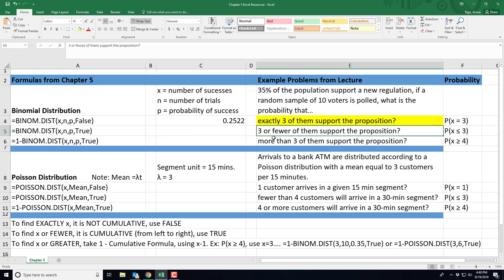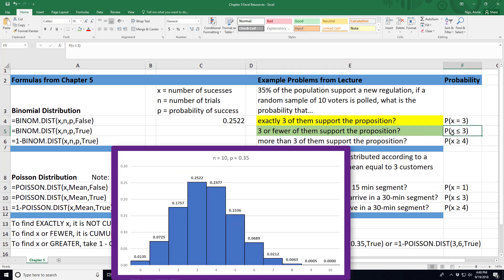Let's look at the next scenario. Three or fewer of our voters support the proposition. So again, we have to write that as a probability statement. So three or fewer is the same as saying x is less than or equal to three.